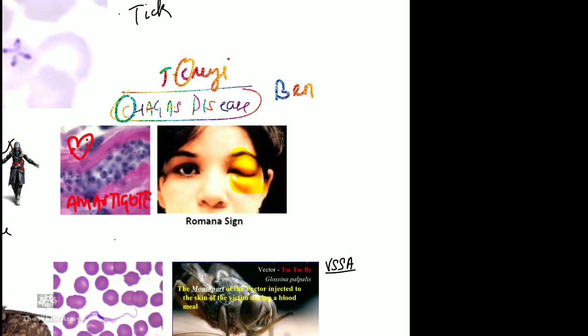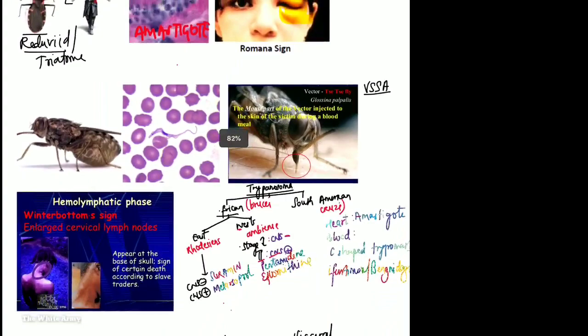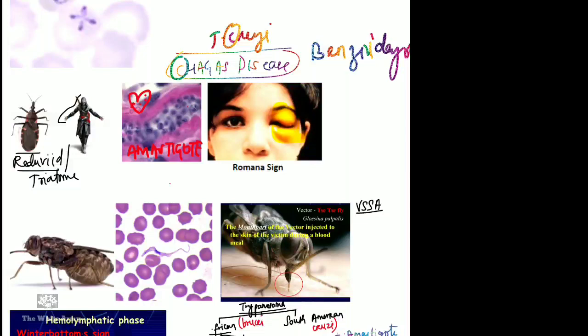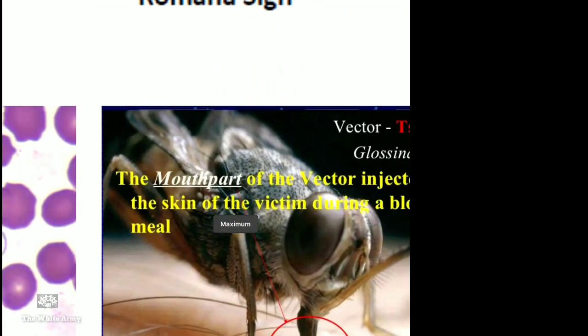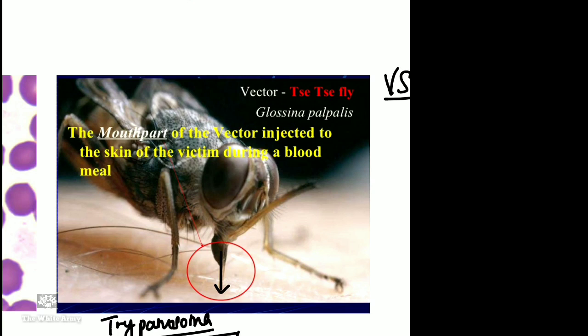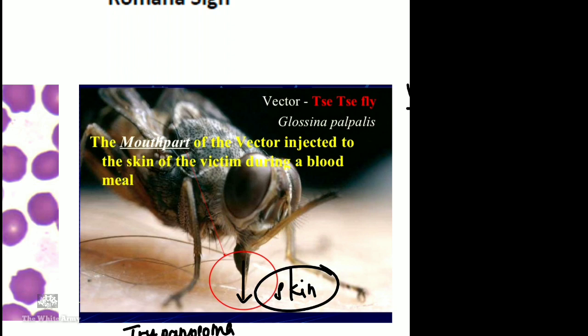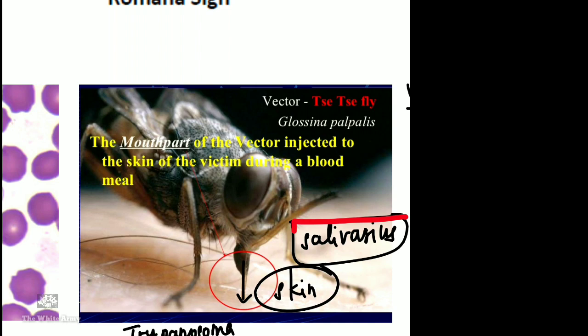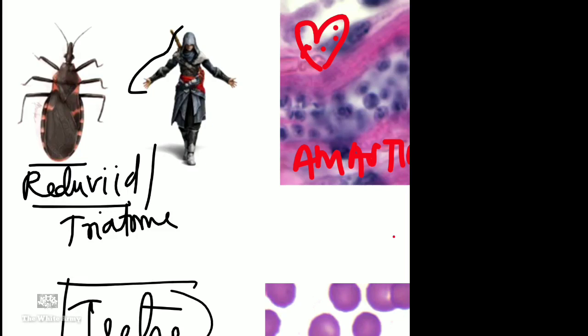The tsetse fly causes African sleeping sickness. Transmission is salivarius (through the bite). In contrast, Chagas disease (reduviid/kissing bug) spreads through feces — called stercoraria transmission. The trypomastigote form is seen in blood. In African sleeping sickness, stage one (hemolymphatic) shows Winterbottom's sign — posterior cervical lymphadenopathy — with no CNS symptoms. Stage two involves CNS, causing sleeping sickness.